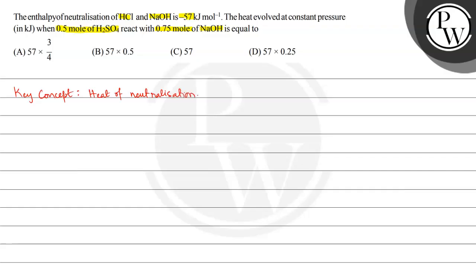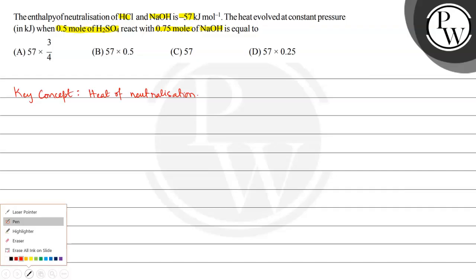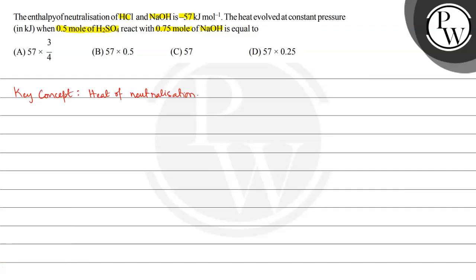HCl is a strong acid and NaOH is a strong base, and for this the enthalpy of neutralization is minus 57 kilojoule per mole. We can write the neutralization reaction of HCl and NaOH as: H⁺ + OH⁻ → H₂O, and for this delta H is equal to minus 57 kilojoule per mole.